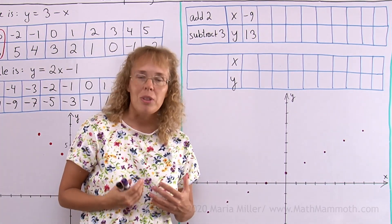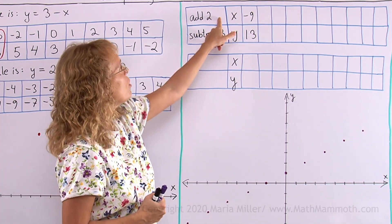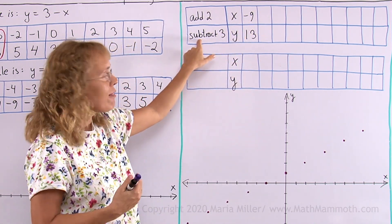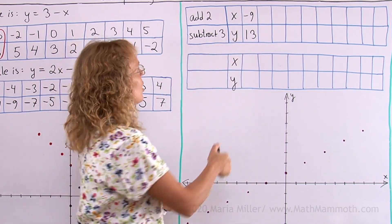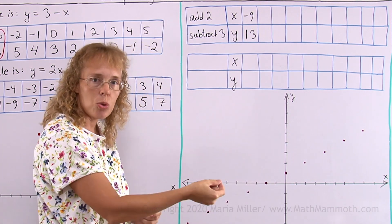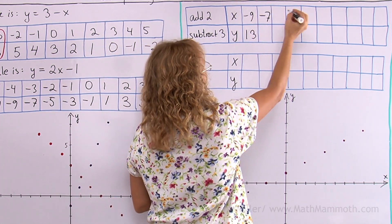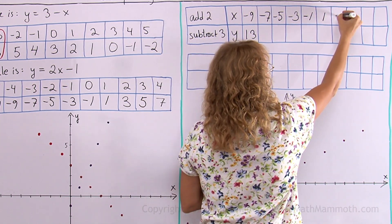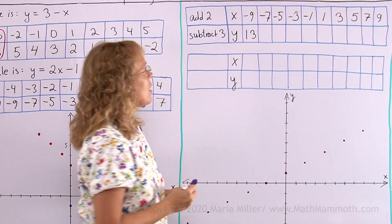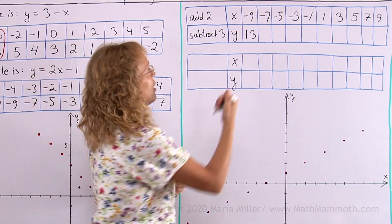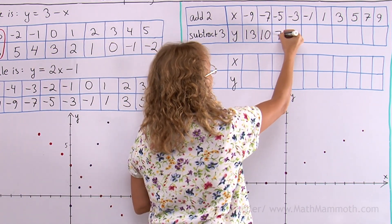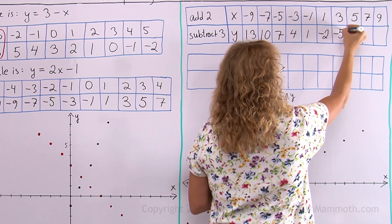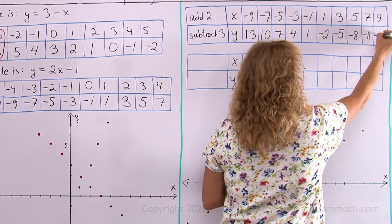Over here, we are given the rule in a little bit different manner. Add 2 in the x values, we add 2 each time starting at negative 9. And in the y values we subtract 3 each time starting at 13. So I'll just take minus 9 and add 2, so that is negative 7. Add 2 more, negative 5, negative 3, negative 1, like that. Then in the y values I subtract 3 each time. So it gets to be 10, then 7, then 4, then 1. 1 minus 3 is negative 2, then negative 5, negative 8, negative 11, negative 14.